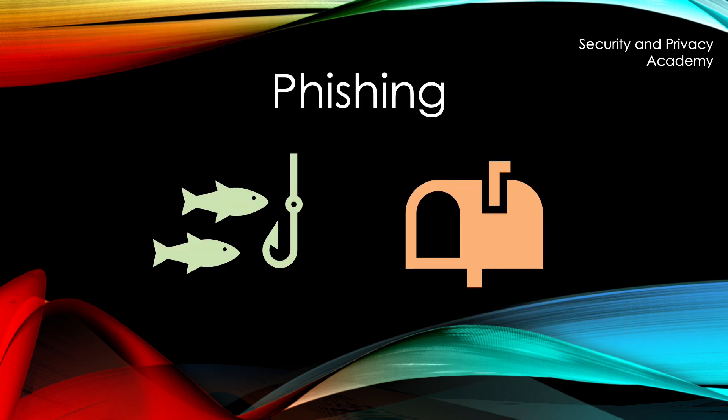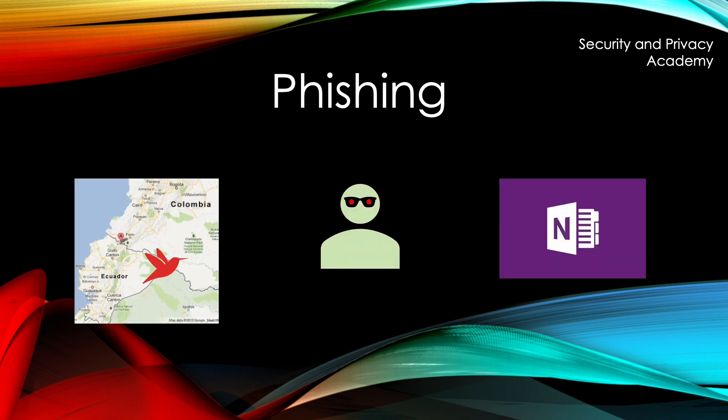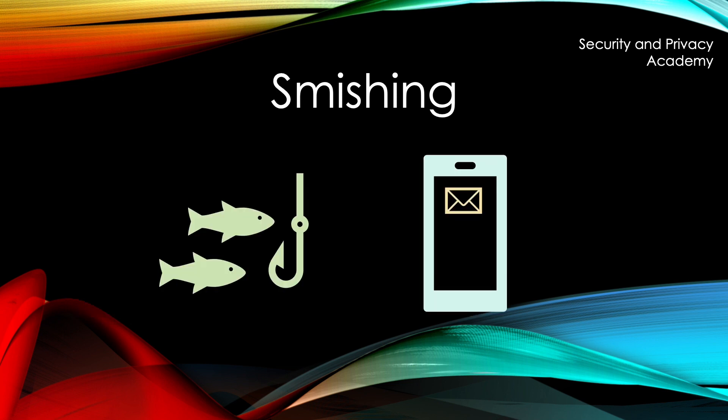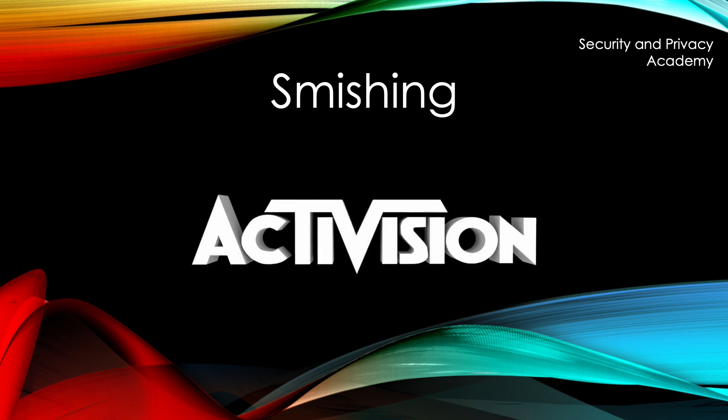No social engineering video is complete without mentioning phishing, which is the most popular and most dangerous social engineering concept used. It has been used in different attacks we've mentioned before — the RedEyes attack on a South Korean word processor, the OneNote exploit, and the Blind Eagle attack. A variant of this is smishing, where instead of emails you use SMS or text messages, which happened, for example, in the Activision hack.